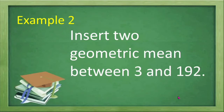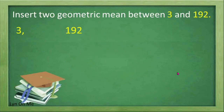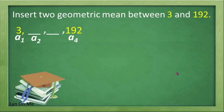Another example: insert 2 geometric means between 3 and 192. We have two given numbers, 3 and 192, and we are going to insert 2 geometric means between them. In our sequence, 3 is our first term and 192 is our last term, or a sub 4. So we are going to look for a sub 2 and a sub 3, which are the geometric means between 3 and 192.